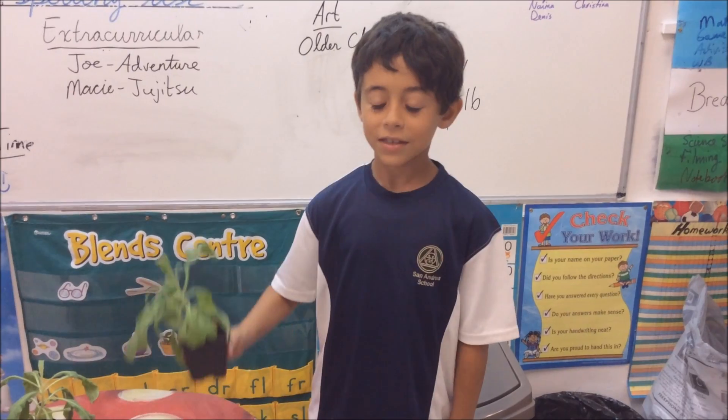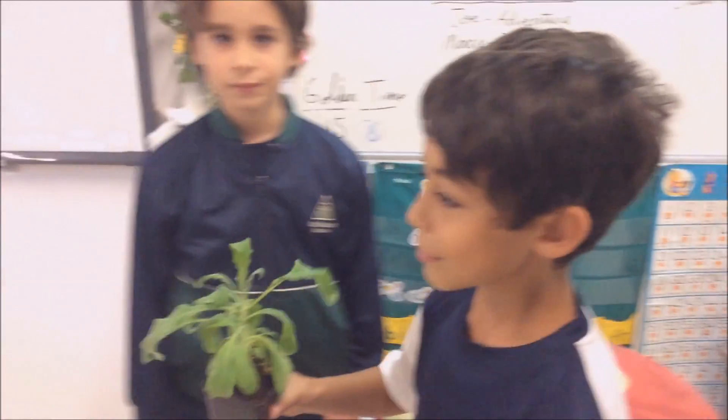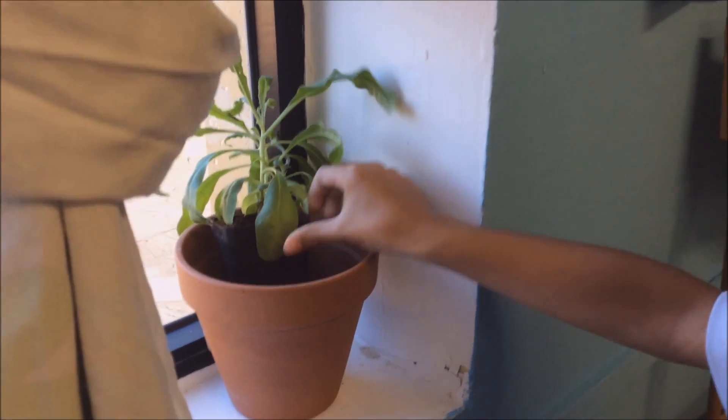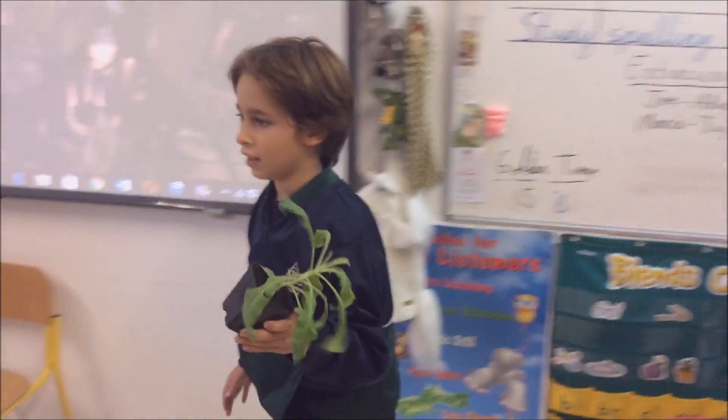To do the investigation we are going to need four plants. The first plant will need sun and water. The next plant will be in a cold and light place. The third plant will have no water, and finally the last plant will be in the dark. This plant is going to have sun and water. This plant will be only in a cold place but it still has light.